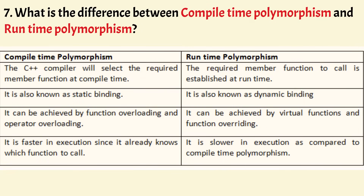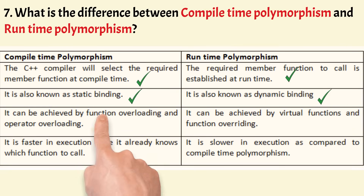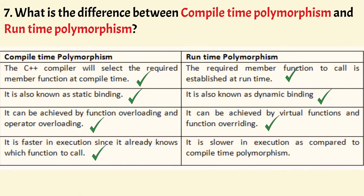Now let us understand the difference between compile time polymorphism and runtime polymorphism. In compile time polymorphism, the C++ compiler selects the required member function at compile time, whereas in runtime polymorphism, the required member function to call is established at runtime. Compile time polymorphism is also known as static binding, while runtime polymorphism is also known as dynamic binding. Compile time polymorphism can be achieved by function overloading and operator overloading, whereas runtime polymorphism can be achieved by virtual functions and function overriding. Compile time polymorphism is faster in execution, whereas runtime polymorphism is slower in execution.